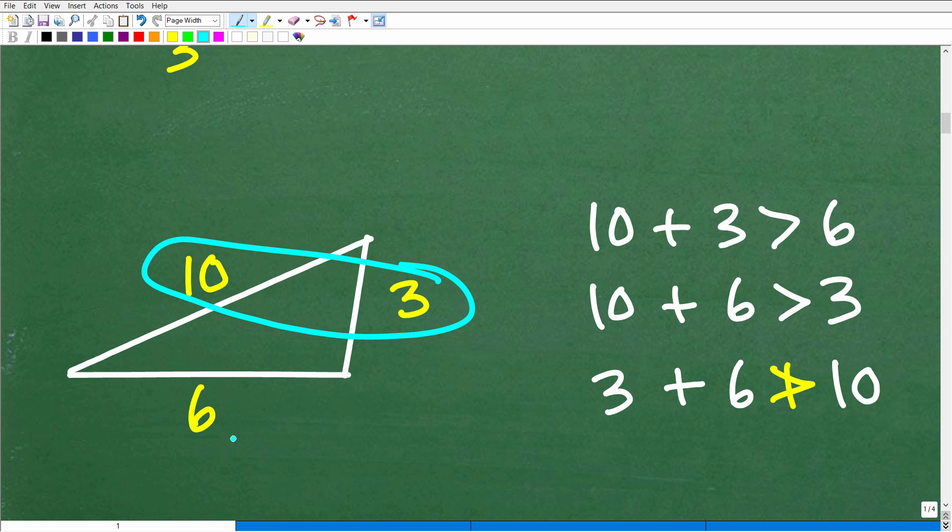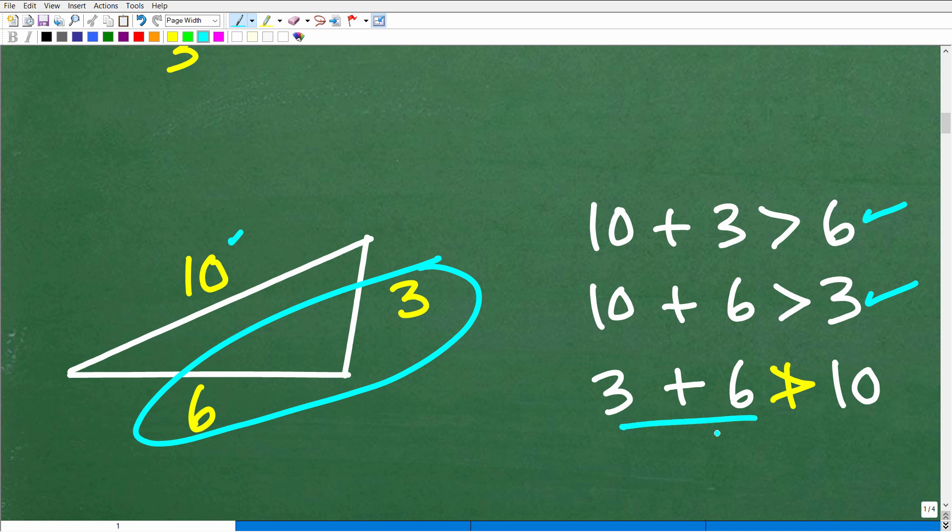So 10 plus 3, is 10 plus 3 greater than 6? Well, yes it is. So 10 plus 3, that's 13. That's greater than 6. So that checks out. Let's do 10 and 6. Is that greater than 3? 10 plus 6, 16. That is greater than 3 as well. Everything looks pretty good all the way up to the point where we go 6 and 3. Is 6 and 3 greater than 10? Well, this is 9. This is not greater than 10. So this fails right here. Meaning that you cannot construct a triangle of these dimensions, of these lengths.